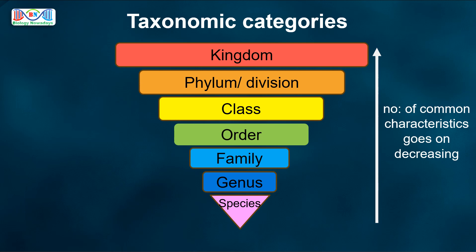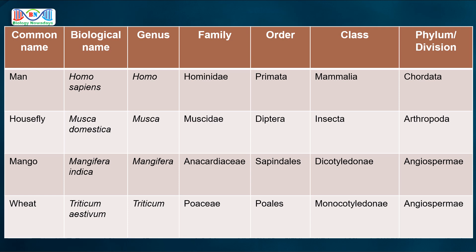I hope it is clear now. When you learn this chapter, be thorough with the ascending order of the taxa in taxonomical hierarchy, i.e., from species to kingdom, and also remember that as we go higher from species to kingdom, the number of common characteristics goes on decreasing. Here is a table with the scientific names of some common plants and animals — study this table for a better understanding of various taxa. When you feel you have learnt this chapter thoroughly, watch our video on living world MCQs to test whether you got all the important concepts right. The link will be given in the description box below.